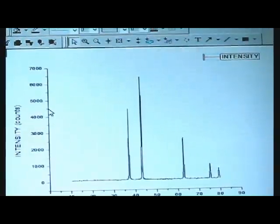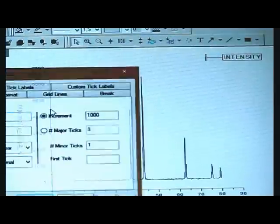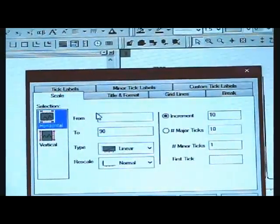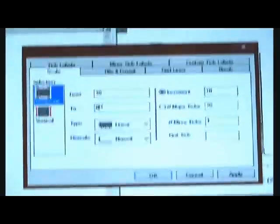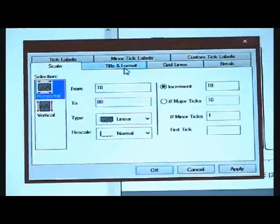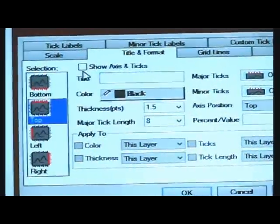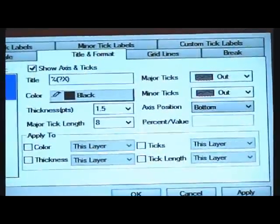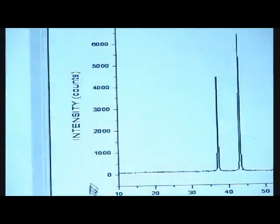We can display it in a better way. For this, double click on the vertical bar and change the horizontal scale from 10 to 80. And also click on the title and format icon. Now mark the top axis and the right axis. The bottom and the left axis are also shown. So now click on OK. We get it in a better way.